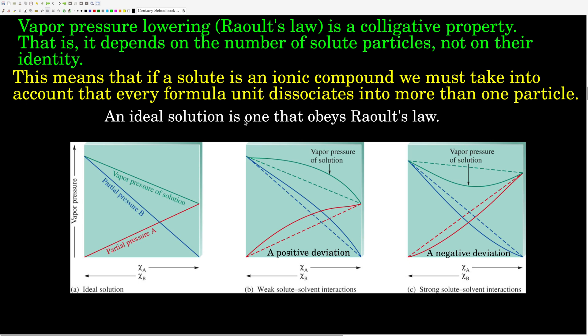First, let's talk about what an ideal solution is. Just like an ideal gas obeys the ideal gas law and kinetic molecular theory, an ideal solution is one that obeys Raoult's Law. If we graph the vapor pressure above the solution versus the mole fraction of the solvent, we would expect a straight line, like the green one shown here. One underlying assumption of Raoult's Law is that the strength of the intermolecular forces between solute and solvent particles is exactly the same as the strength of the interaction between solvent particles with each other. If that's true, we have an ideal solution and the graph is a straight line.